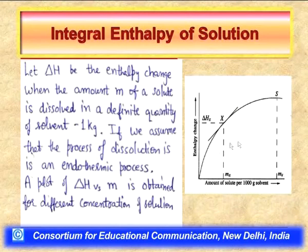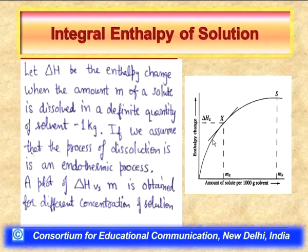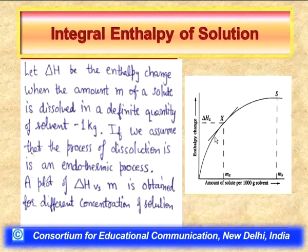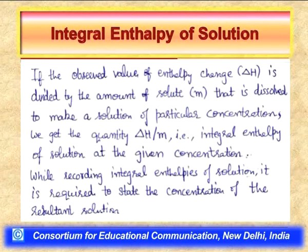A generalized plot of enthalpy change for the dissolution process versus amount of solute dissolved per 1000 g of solvent shows that as the concentration of solute increases in a fixed quantity of solvent, enthalpy change increases — but initially linearly, and thereafter the increase is not in proportion to the concentration of solute added. The total heat evolved increases with concentration but not proportionally.